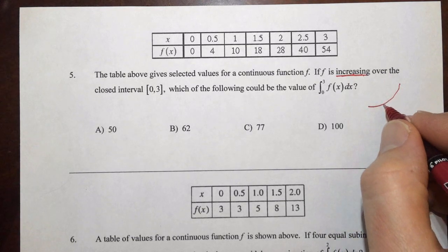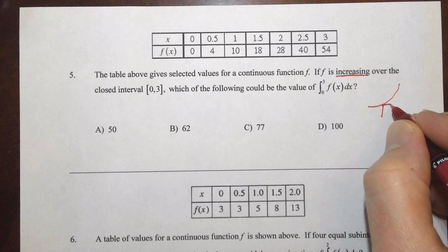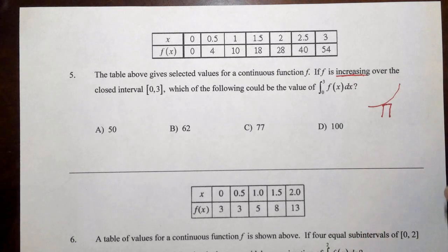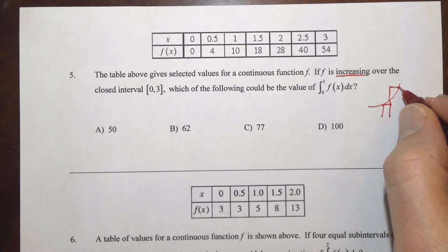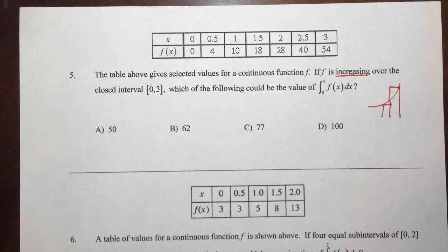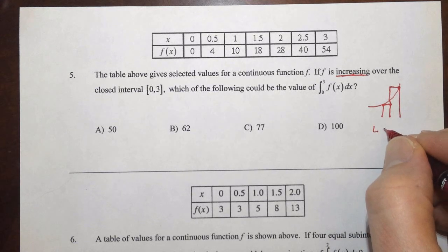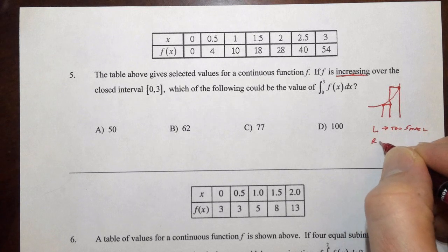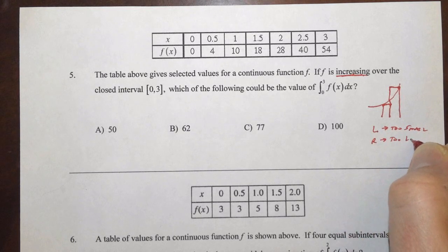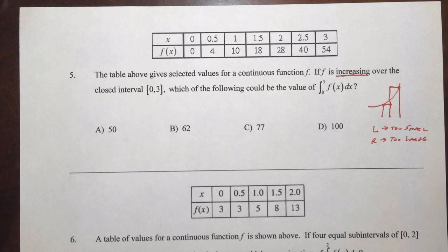We can see that a left sum, let me draw a left rectangle, would be an under approximation, whereas a right sum would be an over approximation. So we know that the left is going to be too small, and we know that the right is going to be too large.